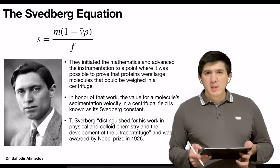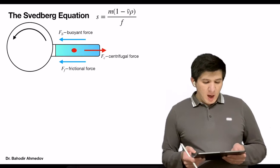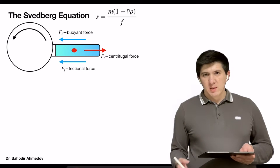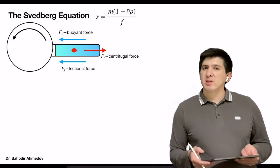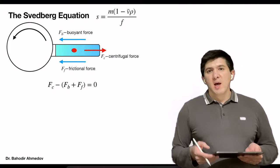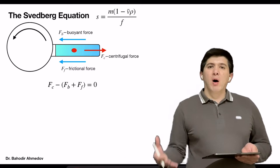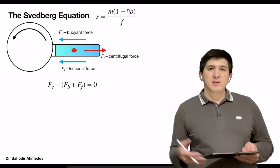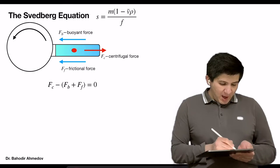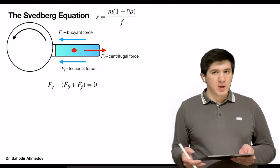We will try to derive this equation. I would like to write down all of these forces and we need to keep the balance between the three forces. If you see that the centrifugal force tends in one direction, and the buoyant and the frictional force tend in the other direction, that is why F minus F_buoyant minus F_friction should be equal to zero.